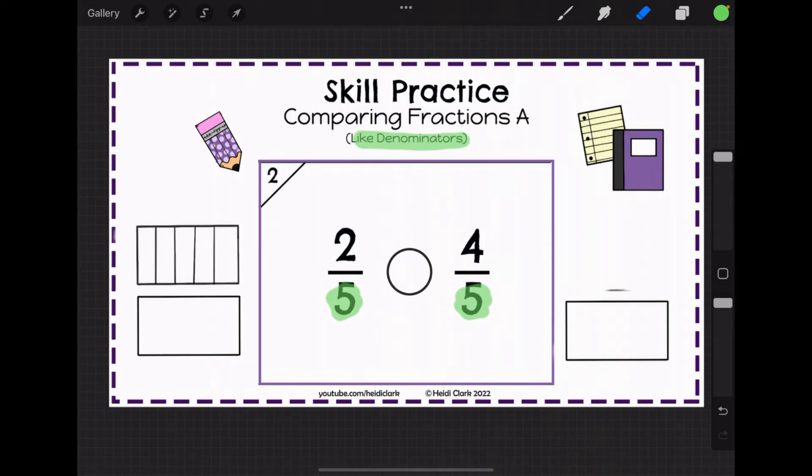Since the denominator is the same on two-fifths and four-fifths, the cake ends up getting split up the same way. So you can see the pieces are the same size here. So these pieces here are all the same size as over here. The size of the pieces is going to be the same no matter what. That's what the denominator means. It's how many pieces it has been split into.